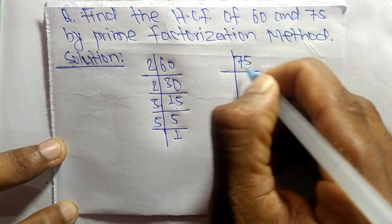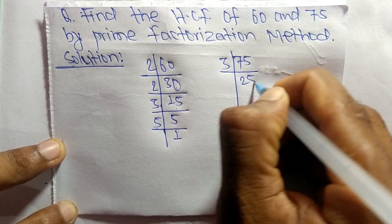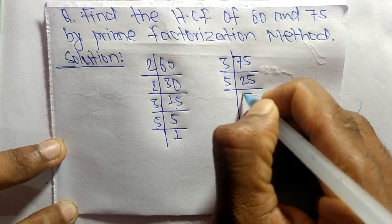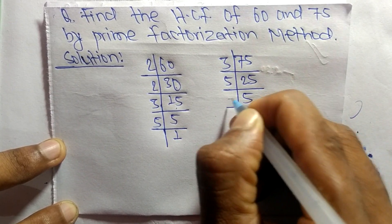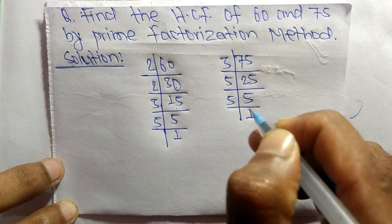Like this, the prime factors of 75 are: 3 times 25 means 75, 5 times 5 means 25, and 5 times 1 means 5.